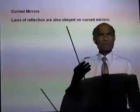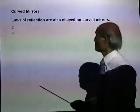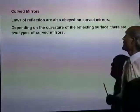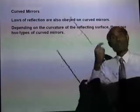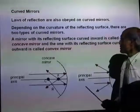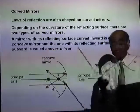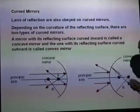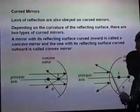How about curved mirrors? They are very common — for example, in a hotel they have a curved mirror which makes your face look bigger. The laws of reflection are also obeyed on curved mirrors. Depending on the curvature of the reflecting surface, there are two types of mirrors: a concave mirror, where the reflecting surface is caved in, and a convex mirror, where the reflecting surface is caved out.